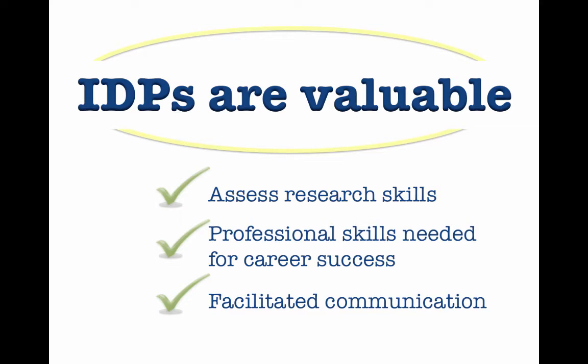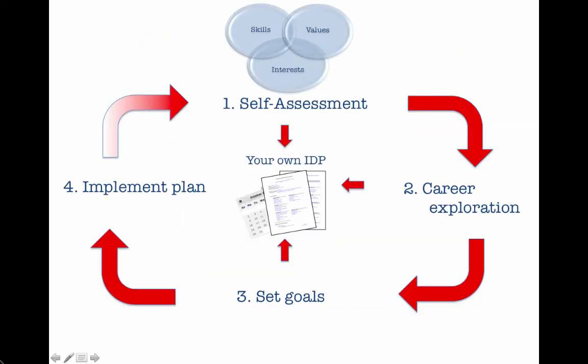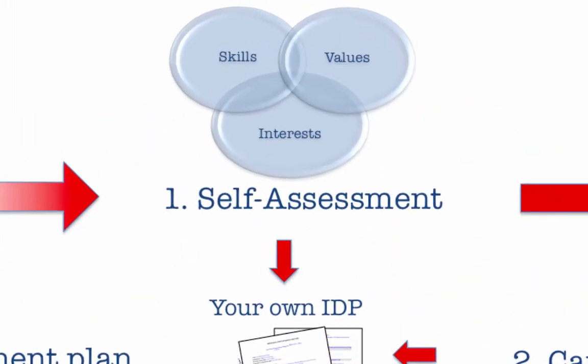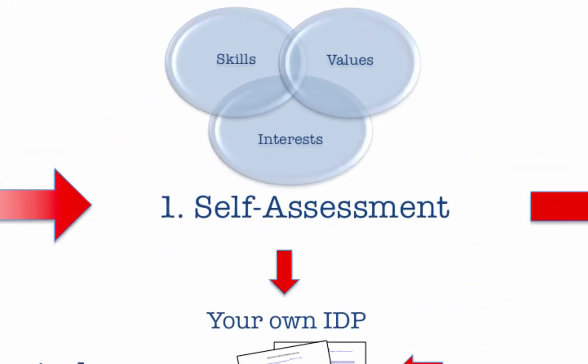So, how do you do an IDP? To create an IDP, you'll go through these four steps. First is the assessment of your skills, interests, and values. You'll create a prioritized list to inform your career decisions.